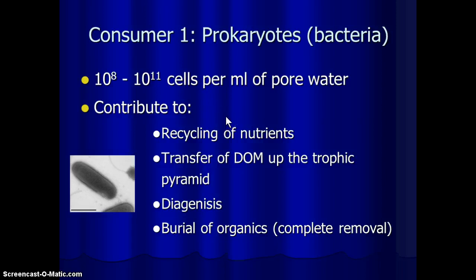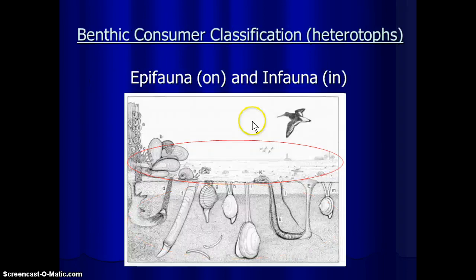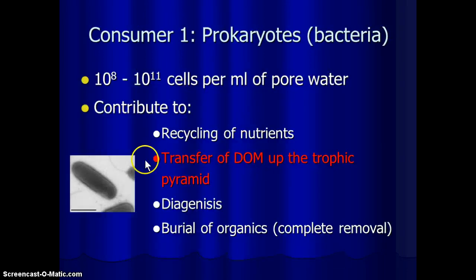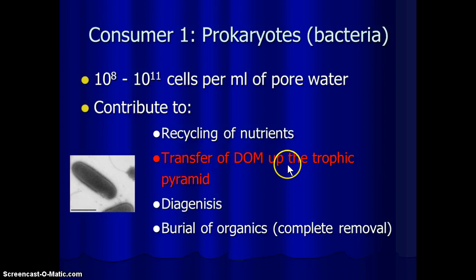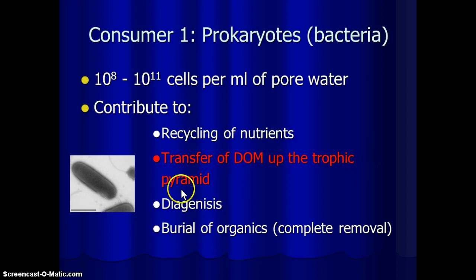Pore water is the space in between the sediment particles, so that's a very highly concentrated abundance of prokaryotes, mainly bacteria. They play much the same role in the benthos as in the water column — they recycle nutrients. The big one is that they are the only organisms that can consume dissolved organic matter. All organic matter input to the seafloor eventually ends up as dissolved DOM, and bacteria are the only ones that can use that, so it can be mobilized and consumed by higher trophic levels.